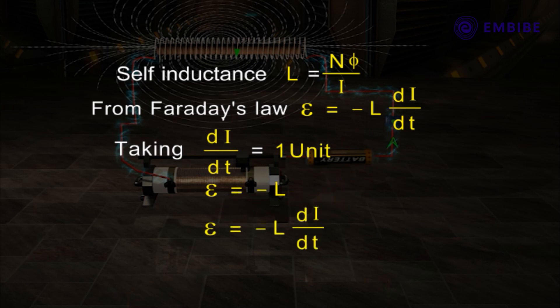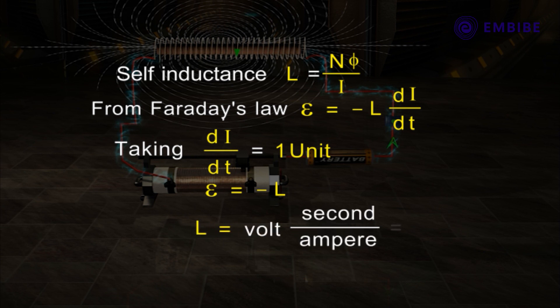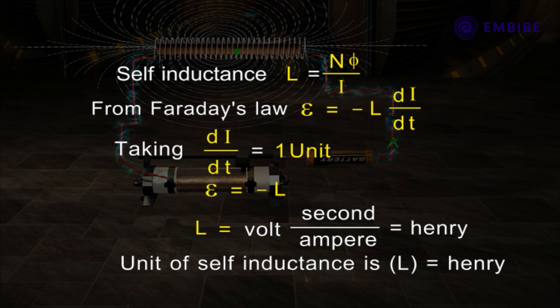If E is measured in volts, I in amperes, and T in seconds, then L is in Henry. The unit for self-inductance is Henry.